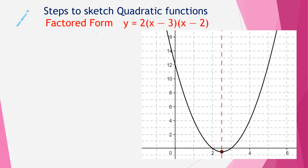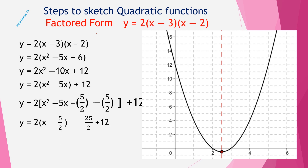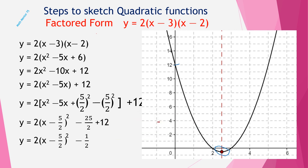Now we have our vertex form and we can sketch it using the same steps. The line of symmetry is x = 2.5, the minimum value is approximately −0.5, and we plot the minimum point. The y-intercept is 0.12 and its reflection is 5.12. We draw a smooth U-shape and can also label the x-intercepts, which are 3 and 2. The process is the same whether we start with factored, expanded, or vertex form — the ultimate target is to convert to vertex form and then sketch it using the five basic rules.